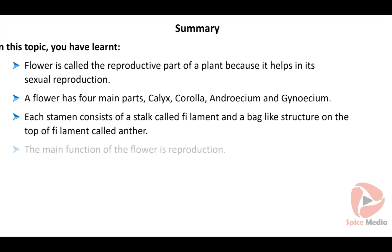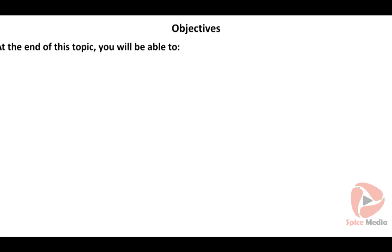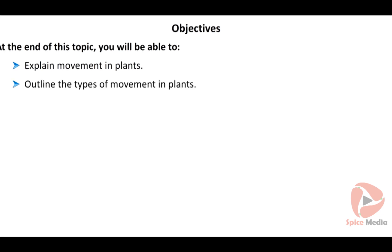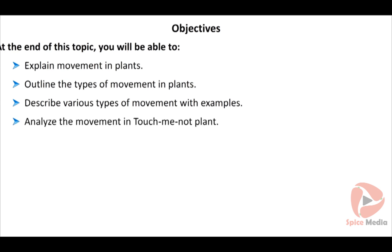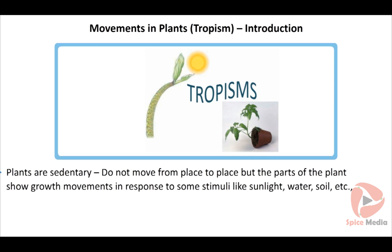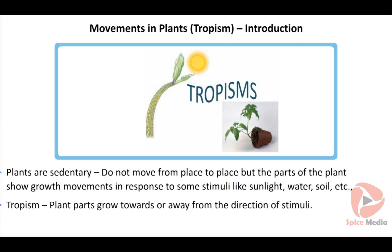At the end of this topic, you will be able to explain movement in plants, outline the types of movement, describe various types of movement with examples, and analyse the movement in touch-me-not plants. Plants are generally sedentary and do not move from place to place, but parts of plants show growth movements in response to stimuli like sunlight, water, and soil. The tendency of plant parts to grow towards or away from the direction of stimuli is called tropism.